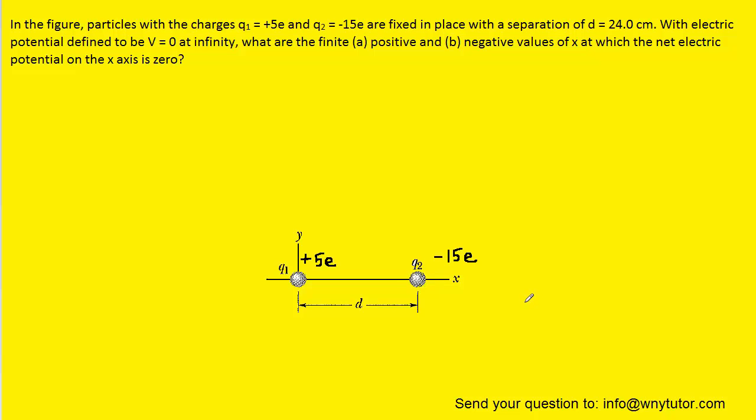And the question wants us to find the locations on the x-axis where the net electric potential, or v, is going to equal 0. And we can see that the x-axis has been divided into three regions. There's the region that lies to the right of q2, there's the region that lies between the two charges, and then the region that is on the left side of q1.